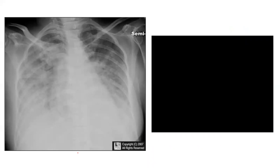Here's your x-ray. Is it unilateral or bilateral? Bilateral. Is it focal or diffuse? Diffuse. Is it interstitial or alveolar? Alveolar — there are kind of fluffy infiltrates.